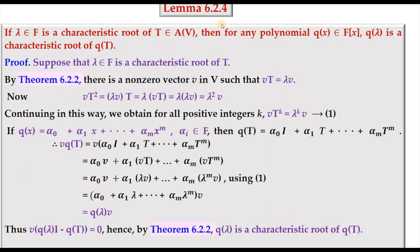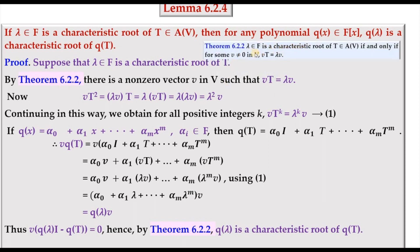In Lemma 6.2.4, we prove that if lambda is a characteristic root of T, then for any polynomial q(x) in F[x], q(lambda) is a characteristic root of q(T). Since lambda is a characteristic root of T, there is a non-zero vector V such that vT equals lambda v. Considering vT², we can rewrite this as vT composed with T, replacing vT by lambda v and using the homomorphism property to get lambda² v. Continuing this process, for any positive integer k, vT^k equals lambda^k v.